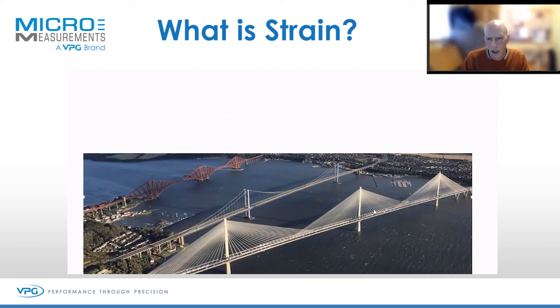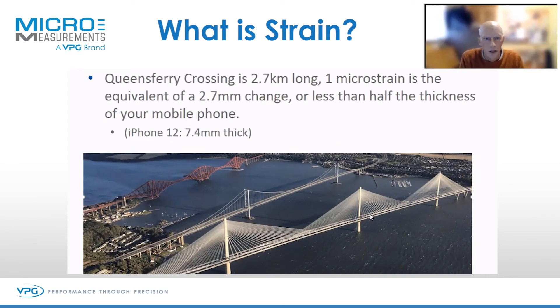This is the UNESCO World Heritage Forth Rail Bridge, the Forth Road Bridge, and the new Queensferry Crossing. This bridge is 2.7 kilometers long, and one microstrain is equivalent of a 2.7 millimeter change. A typical iPhone 12 is 7.4 millimeters thick, so it's half the thickness of your mobile phone.